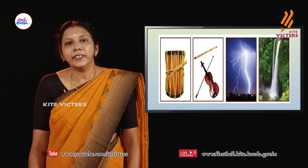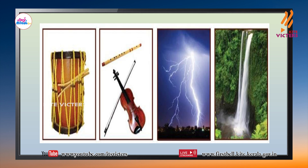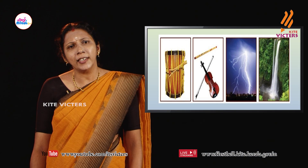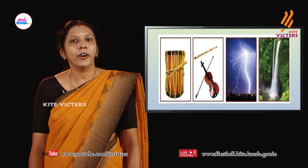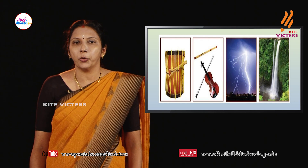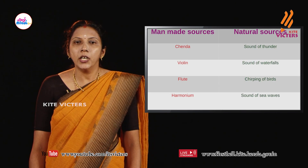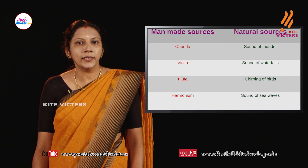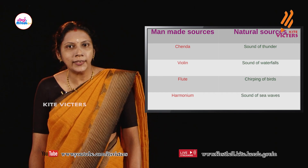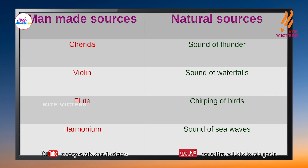Certain situations and instruments that give us sound are given here. Observe the figure. Some are manmade sources and some are natural sources. For example, chenda is a manmade source. What about sound of thunder? It is a natural source. Manmade sources include chenda, violin, flute, harmonium, etc. Natural sources include sound of thunder, sound of waterfalls, chirping of birds, sound of sea waves, etc. You can extend the table by finding more examples.